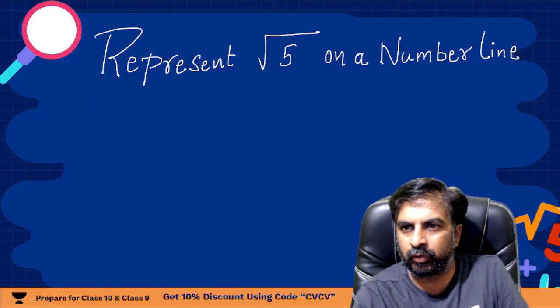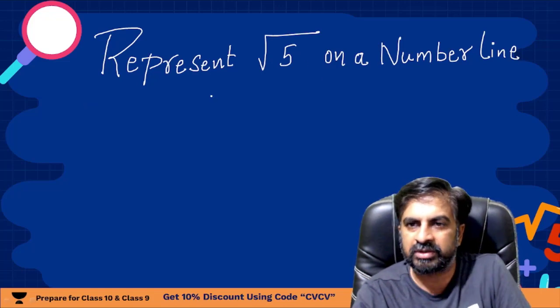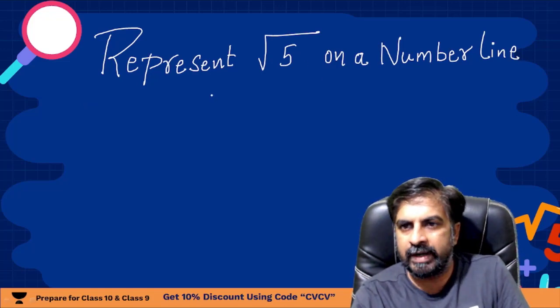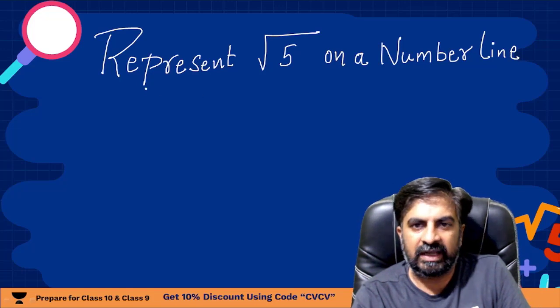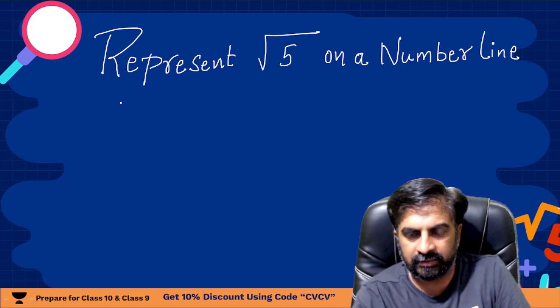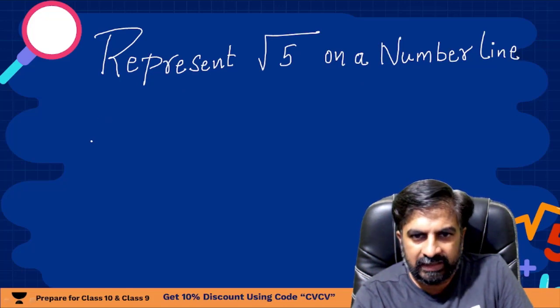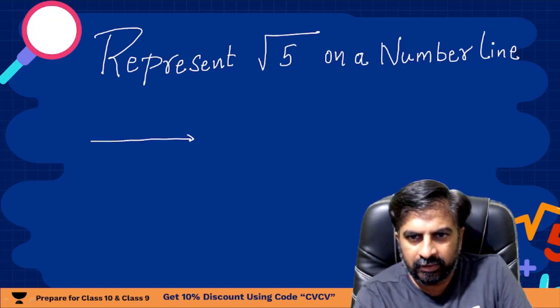Let me tell you how to represent root 5 on a number line. This is the question of chapter number one, number system, class 9 CBSE mathematics. On a number line if you want to represent root 5, let me tell you this is a number line.